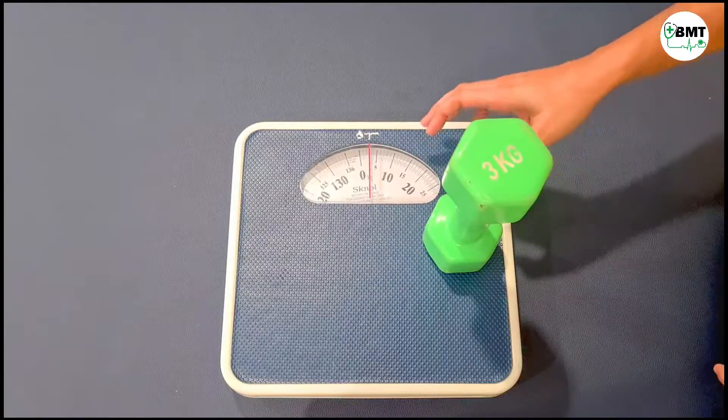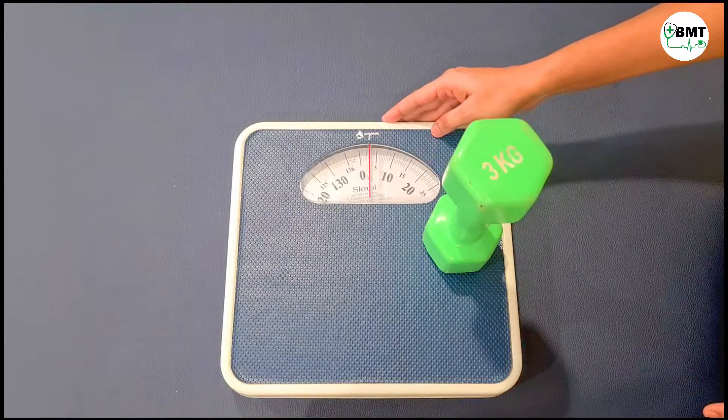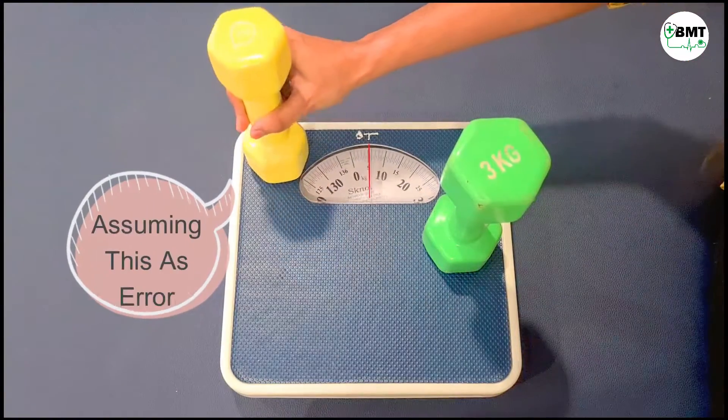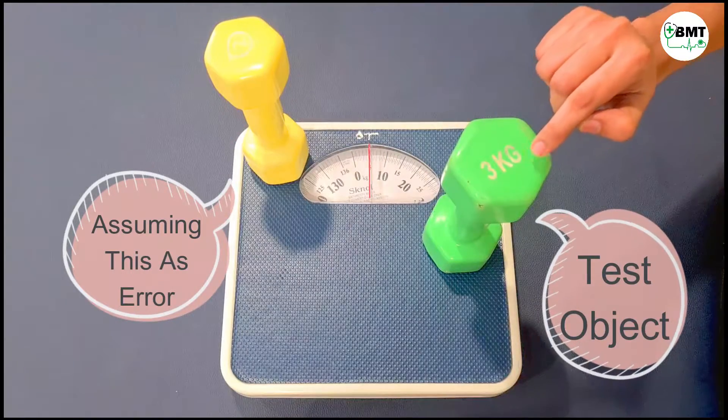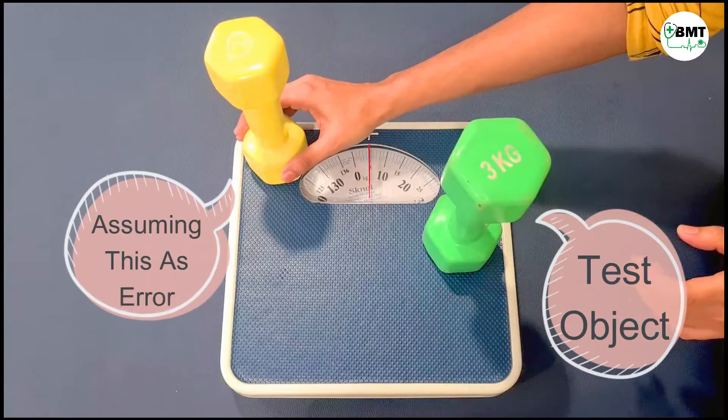Let us assume after a long period of time machine is showing wrong readings. For example, this is the two kg. It is showing extra two kg weight for three kg weight. This is my object and this is the error.